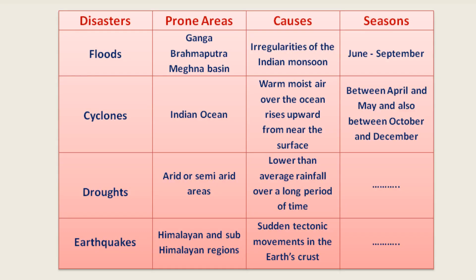Let me begin by analyzing the table. This table is the summary of the first five paragraphs of the chapter on Disaster Management. First, floods. Prone areas: Ganga, Brahmaputra, Meghna Basin. Causes: irregularities of the Indian monsoon. Season: June to September.